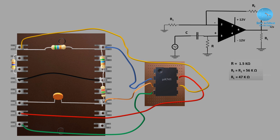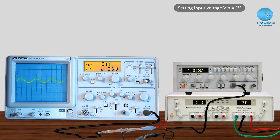The input voltage is monitored on the CRO. The function generator LED display shows VIN. The voltage is set to 1.0 V. For the CRO, channel 2 is connected with 0.5 V per division. We can set the CRO to 1 division, and the output voltage is 0.5 V. The node is adjusted to 1.0 V.